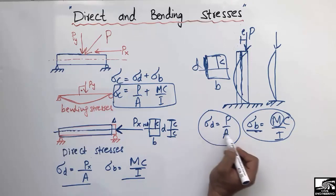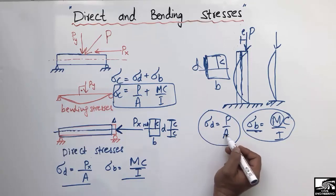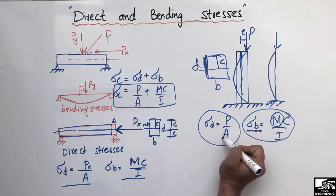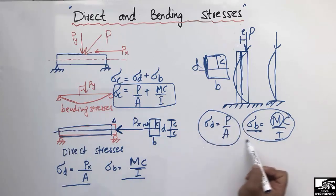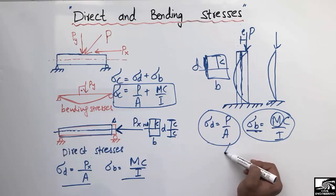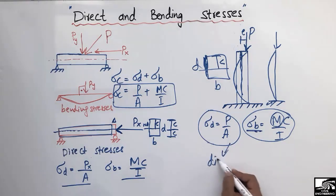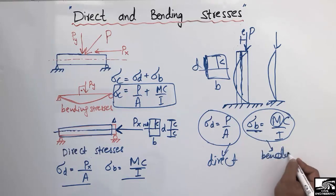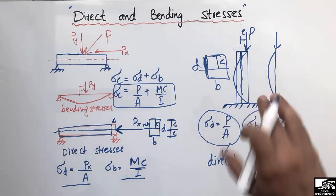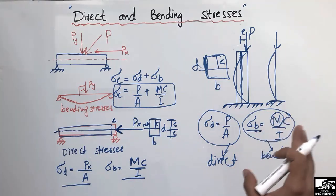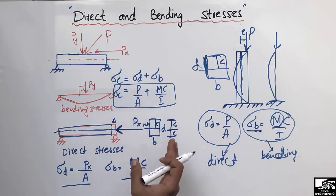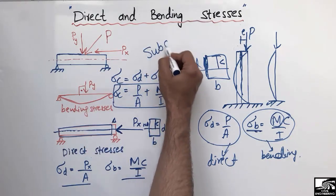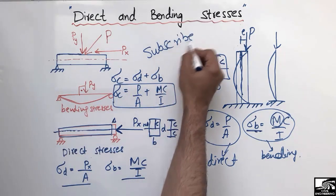If the load acts at the center of the column, we find direct stresses simply by dividing the load by the cross-sectional area. So, in columns as well, there are two types of stresses: direct stresses and bending stresses. It depends on how the load acts on the structural member. I hope you understand the main difference between these two types of stresses. Don't forget to subscribe to our channel for daily engineering videos. Thank you for watching.